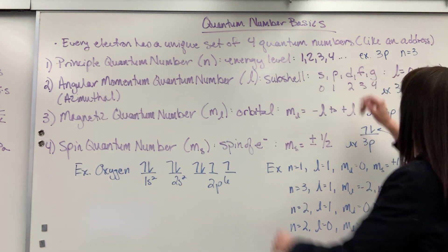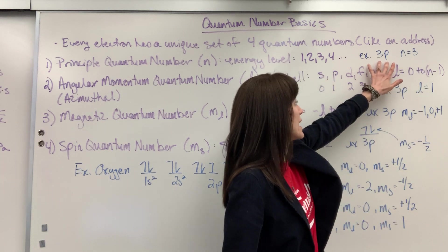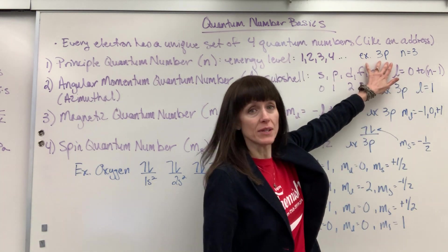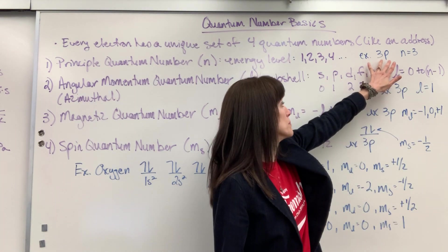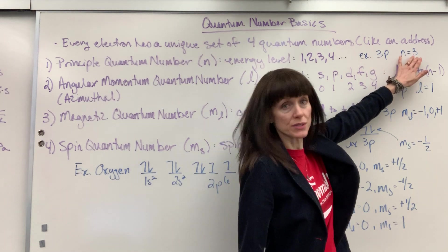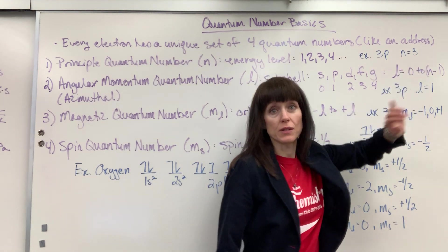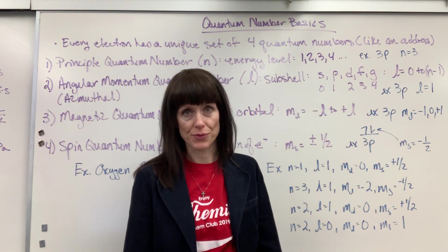Here's an example. Let's say that I have an element that's in the third energy level, the P subshell — N equals three. So the principal quantum number is three.